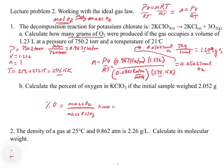So now we can start to plug things in. If the mass of the KClO3 was 2.052 grams, the mass of oxygen is 1.609 grams, we get 78.4% oxygen.